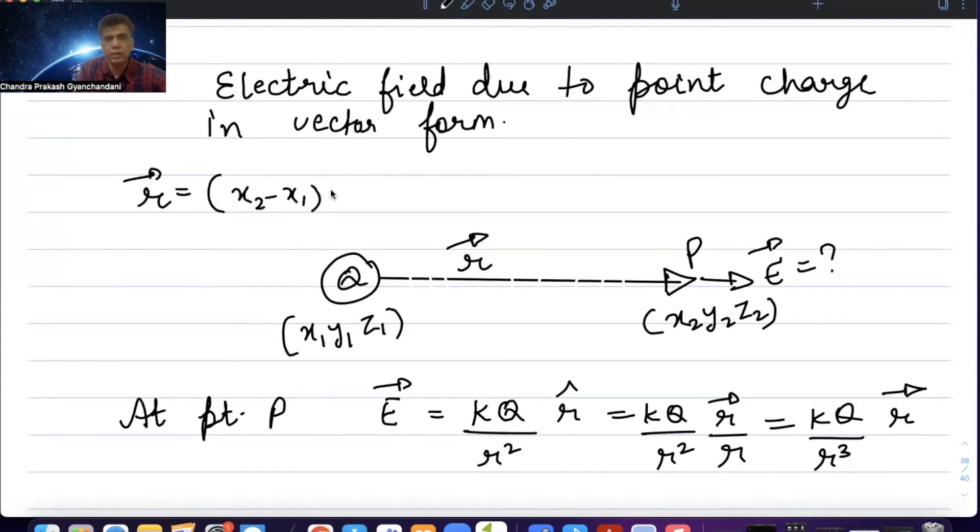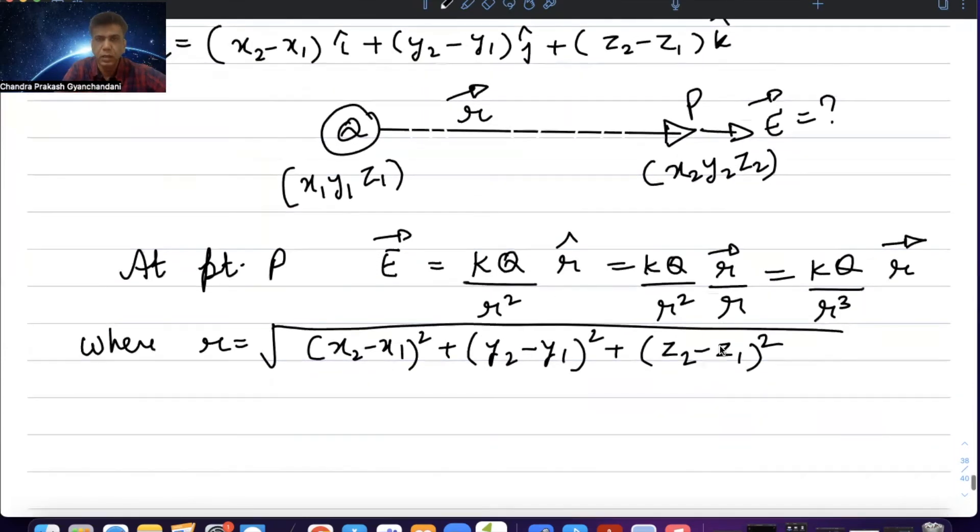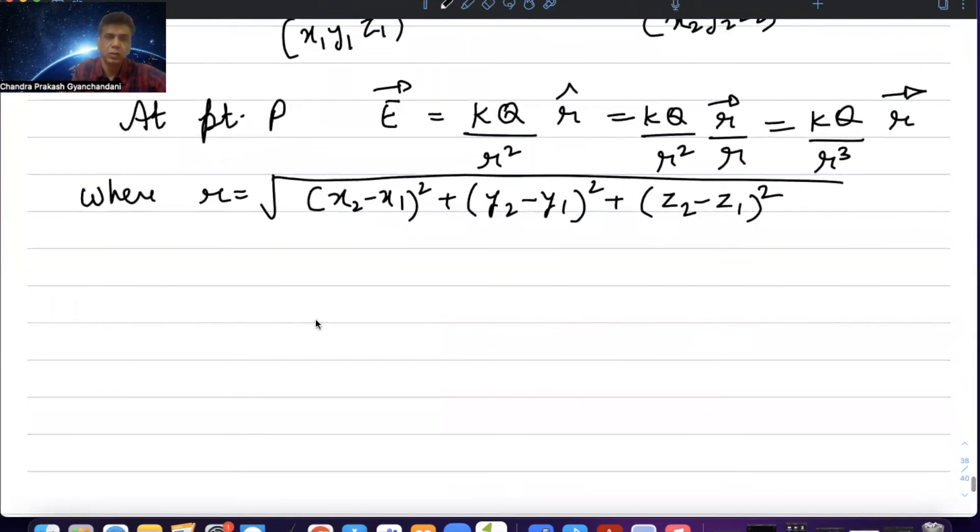That is k Q upon r squared times r hat. Where r vector equals (x2 minus x1) i hat plus (y2 minus y1) j hat plus (z2 minus z1) k hat. And r equals the square root of (x2 minus x1)² plus (y2 minus y1)² plus (z2 minus z1)².